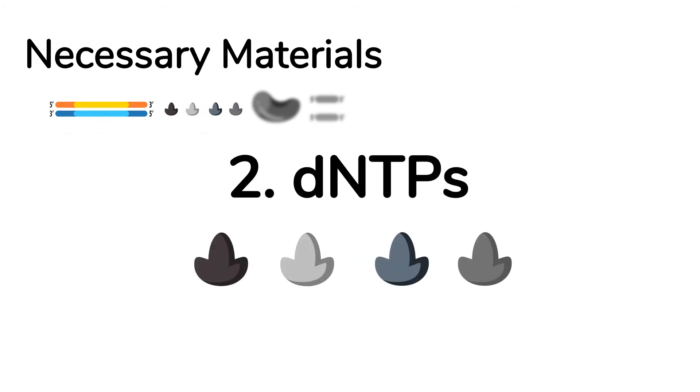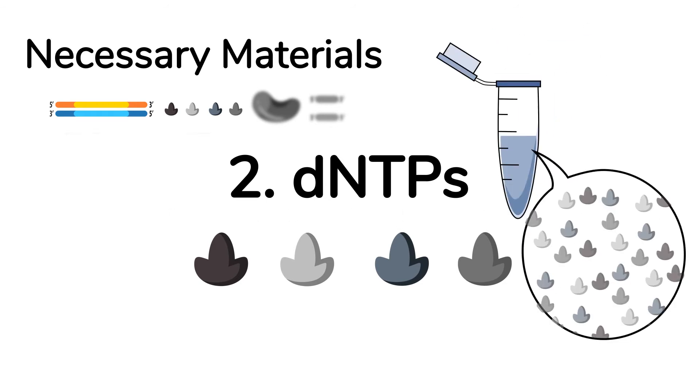Second, we need the building blocks of DNA, the four deoxyribonucleotides: DATP, DCTP, DGTP, and DTTP. Together, the four are called DNTPs. A PCR reaction contains a large excess of DNTPs compared to the amount of the DNA template.